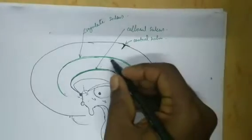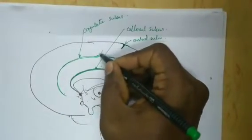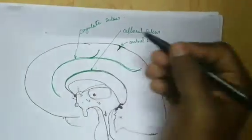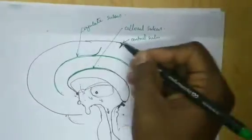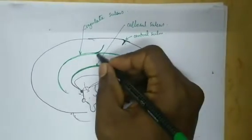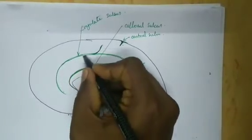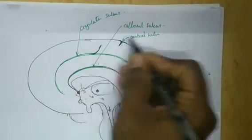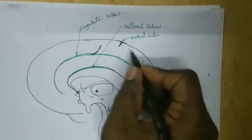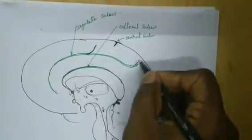The cingulate sulcus has one more small ramus which extends just before the central sulcus. So we have one more small ramus of the cingulate sulcus extending before the central sulcus. This entire thing is the cingulate sulcus.